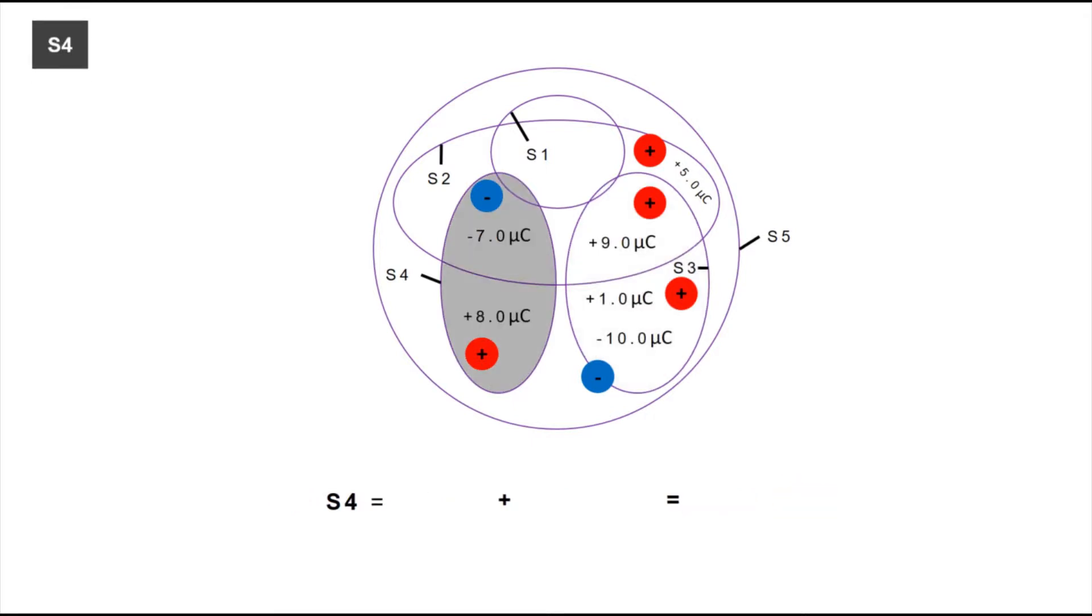The same process goes for the fourth surface. There are two charges in this surface, and we are going to add them up again. And the answer will be 1 µC.